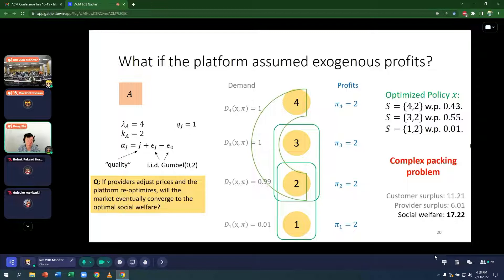Another question one may ask is, okay, so if providers adjust prices and the platform re-optimizes, will the market eventually converge to the optimal social welfare? In other words, even though I have the wrong model or the platform has the wrong model and assumes that profits are exogenous, maybe if it keeps re-optimizing, it doesn't matter. The market will converge to the optimum anyway. So let's see whether this is true.